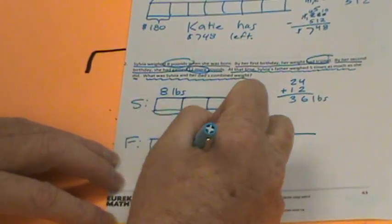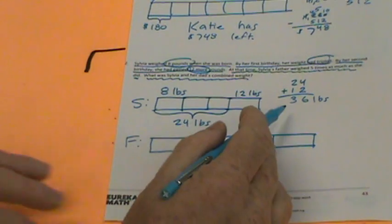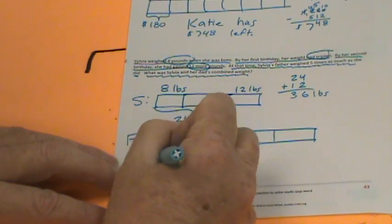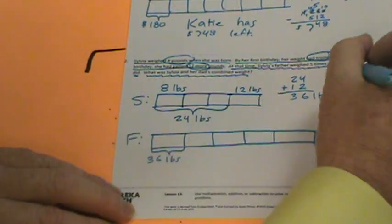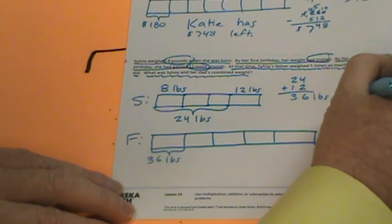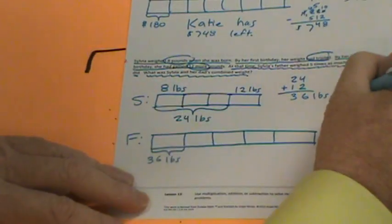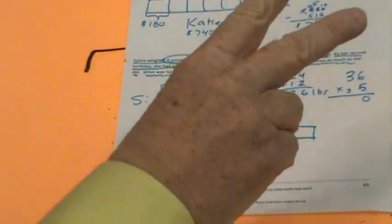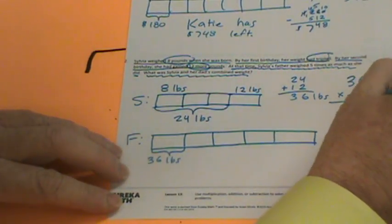At that time, Sylvia's father weighed five times as much as she did. So let's do the father — it's five times as much. We're going to do a tape diagram featuring five sections: one, two, three, four, and five. We know Sylvia weighed 36 pounds by her second birthday, so each one of these is 36. Let's do 36 times five to see how much dad weighs. Six times five is 30. Three times five is 15, so 150 plus 30 is 180. So dad weighs 180 pounds.